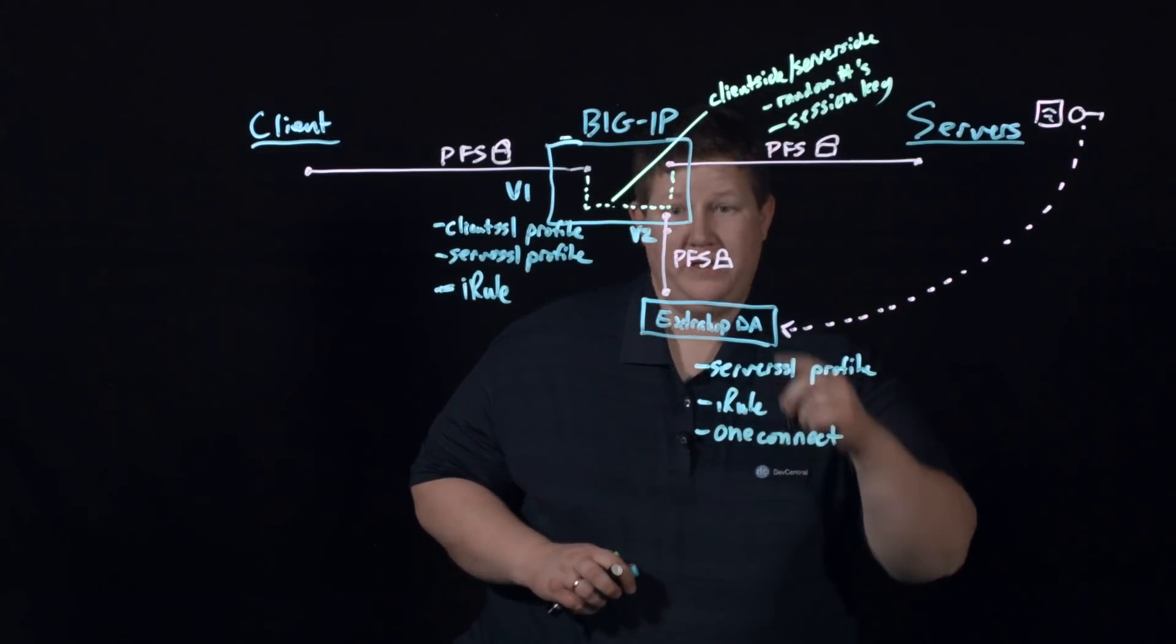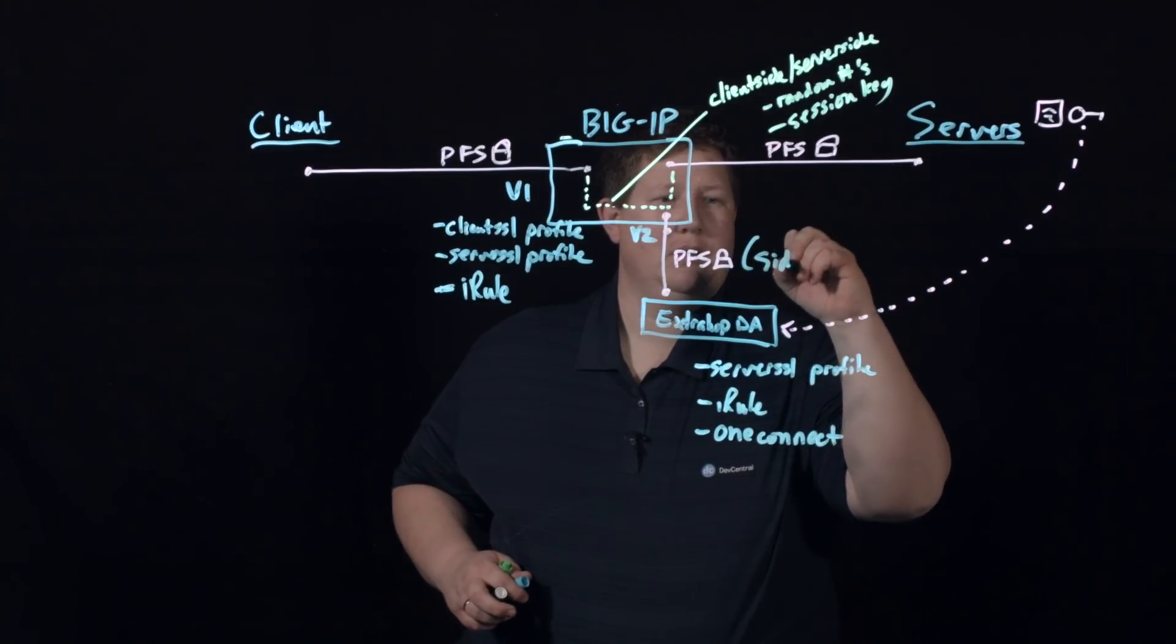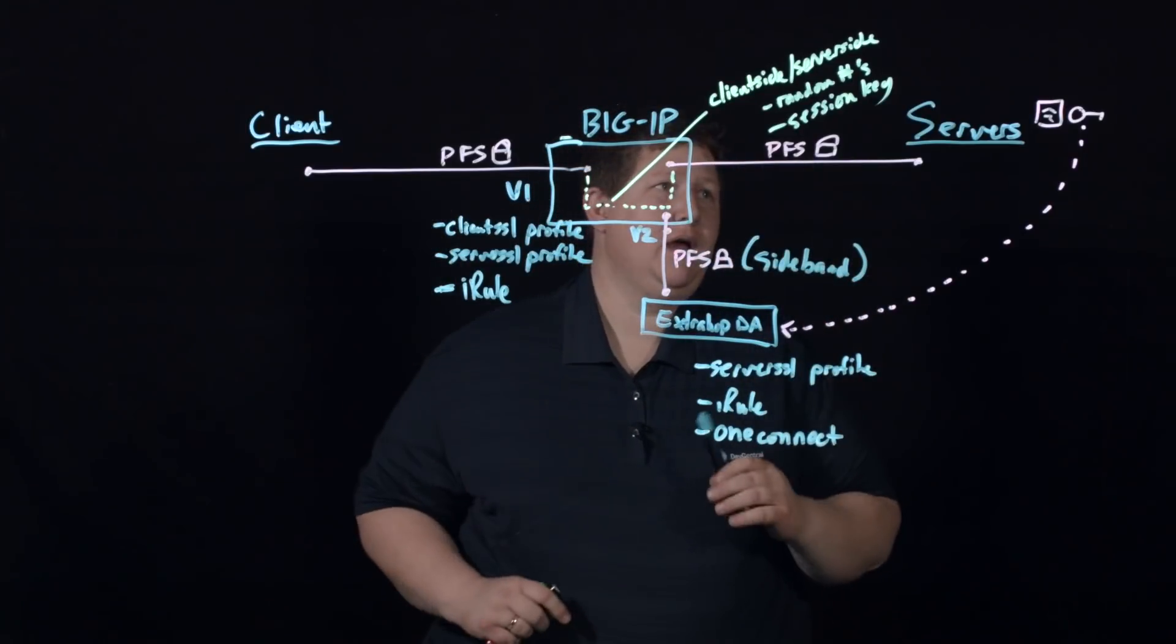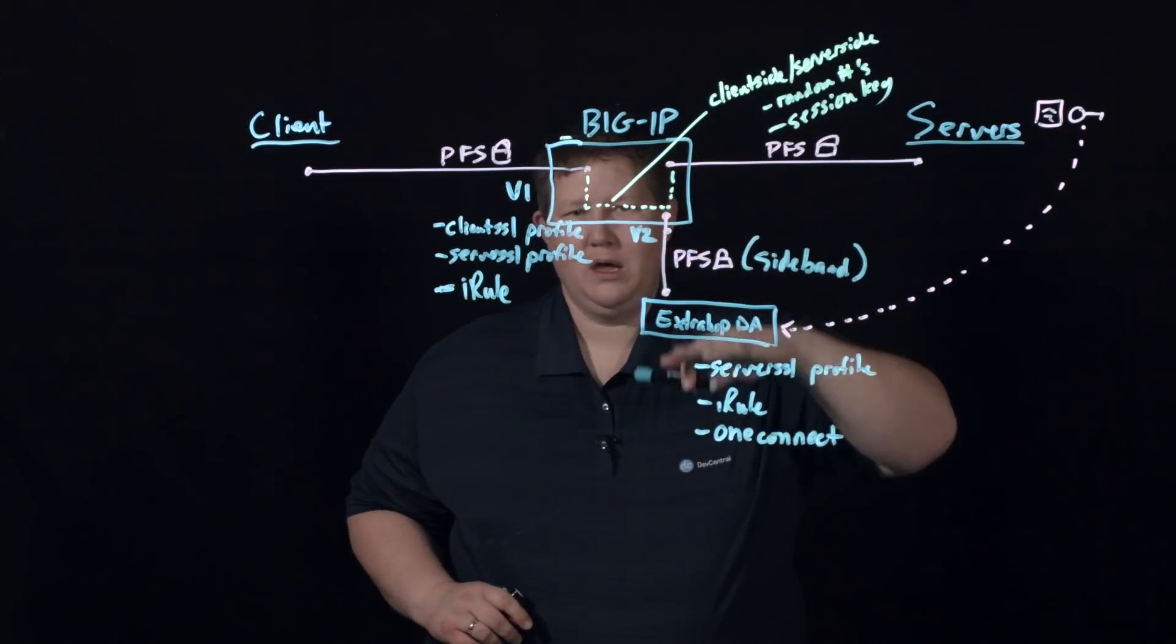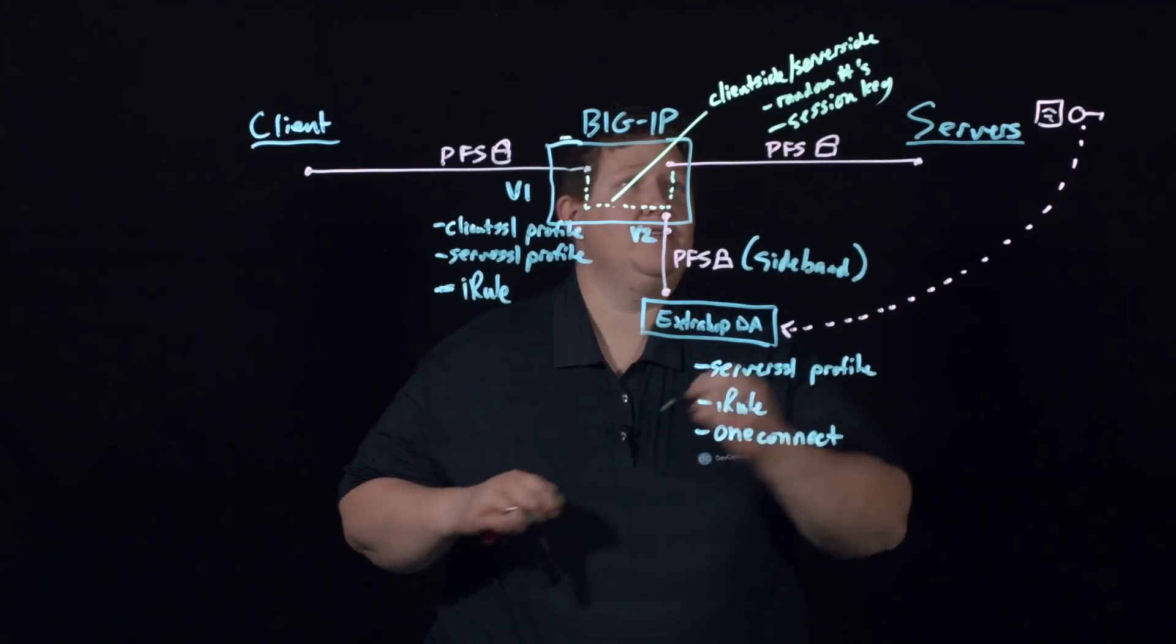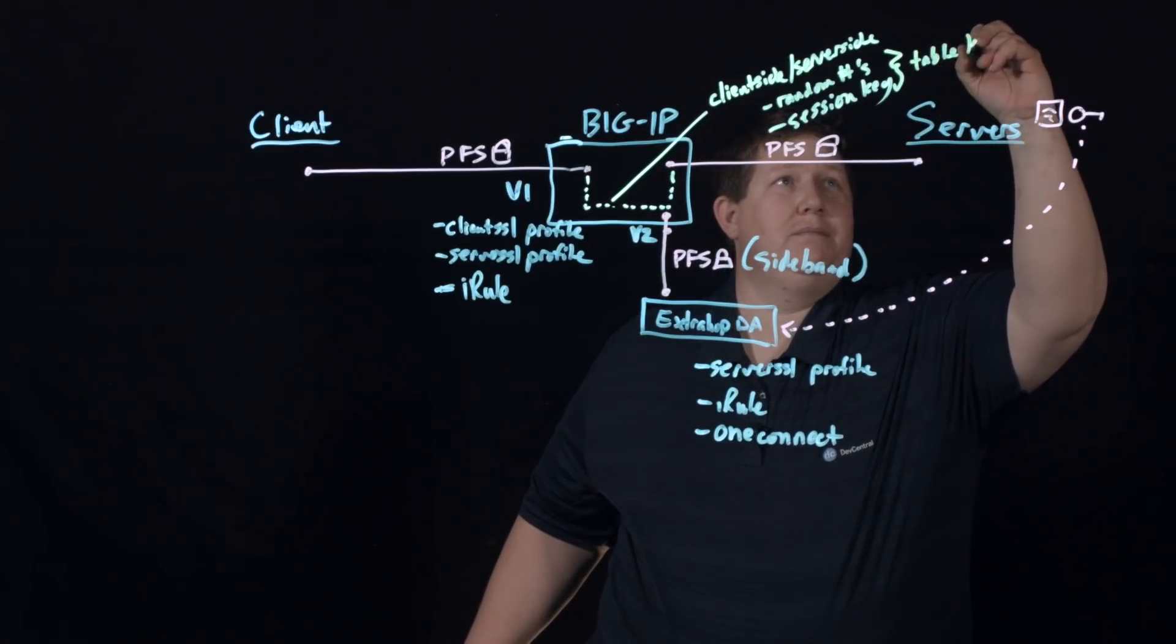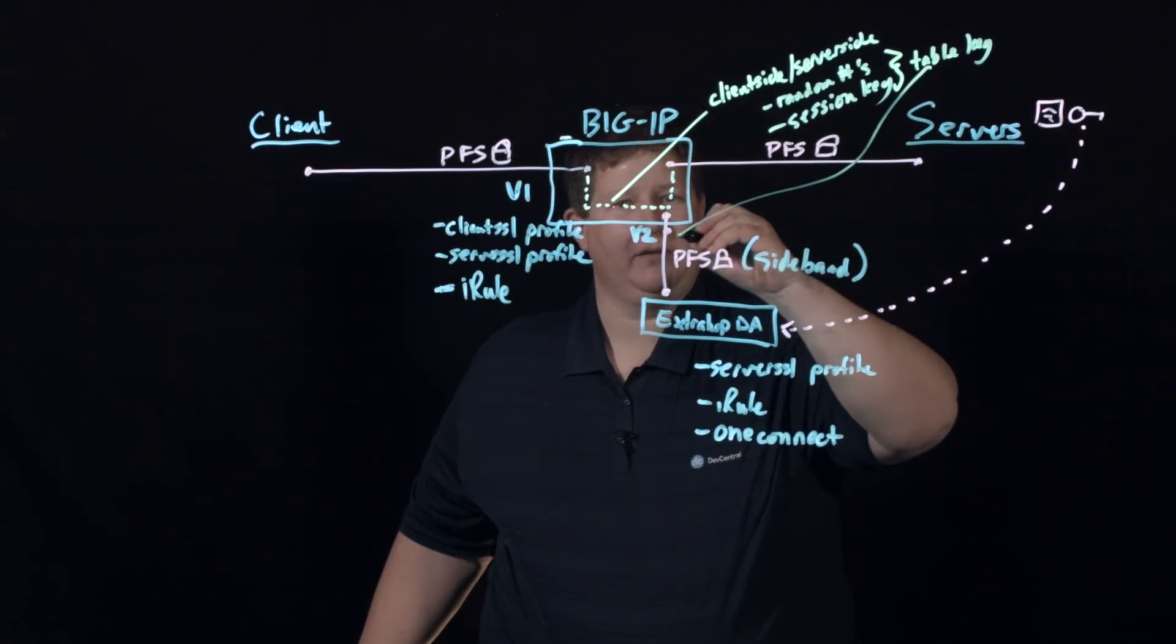And so on this sideband connection over to this ExtraHop Discovery appliance, it uses the one connect so it doesn't have to for every session key that is found create new connections. If there's a connection there, it'll go ahead and reuse that. So it eliminates a lot of overhead by managing individual connections for every session key. So this data is recovered for each client and server, and then it is combined into a table key in memory in the iRule. And so that table key is then passed on this connection down to ExtraHop.